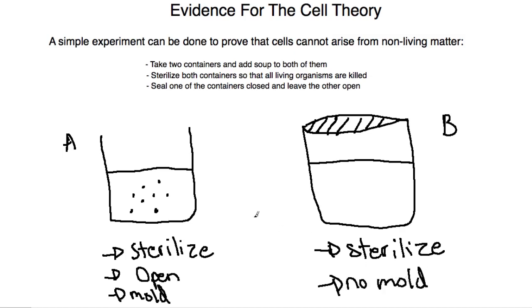And the reason for this is that cells could enter container A from the outside. And so they entered container A, started dividing and produced mold.